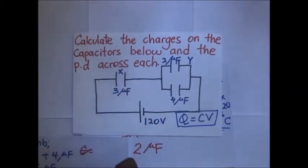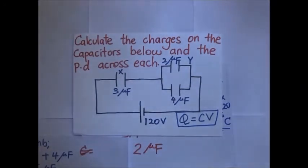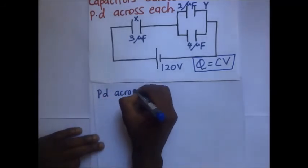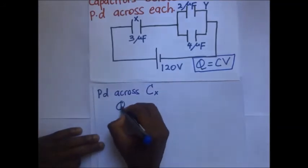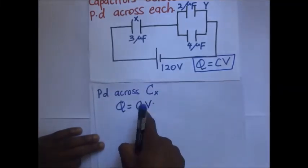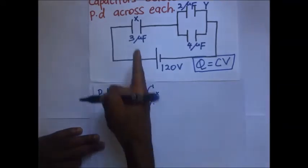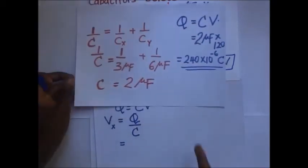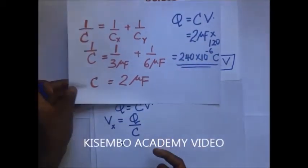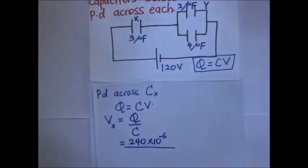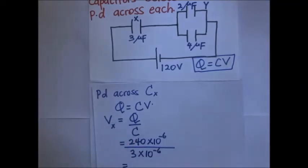The 120 V is equivalent to the PD across CX plus the PD across the parallel combination CY. Knowing the PD across CX allows us to find the PD across the parallel combination, and then we can multiply that voltage by the capacitance of each individual capacitor in the parallel combination to find their respective charges.